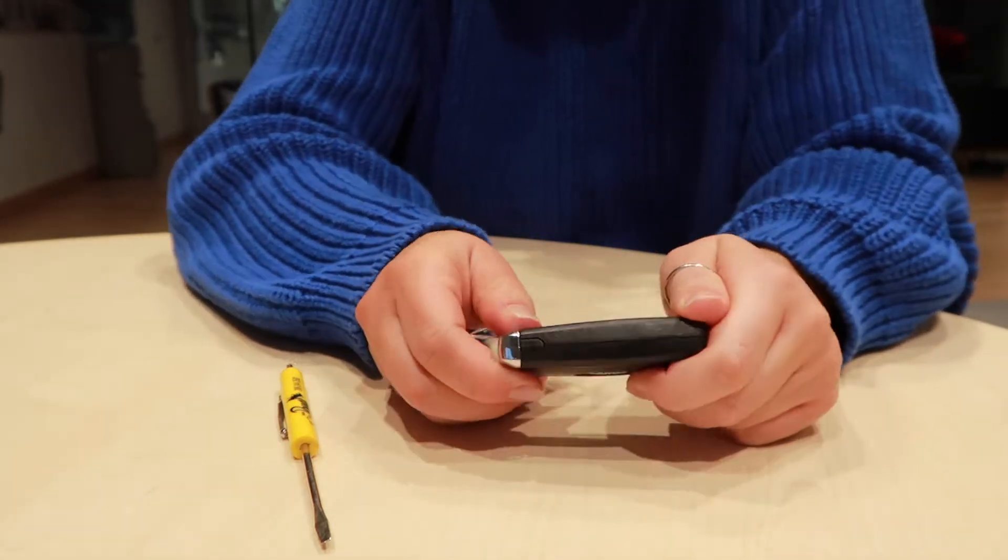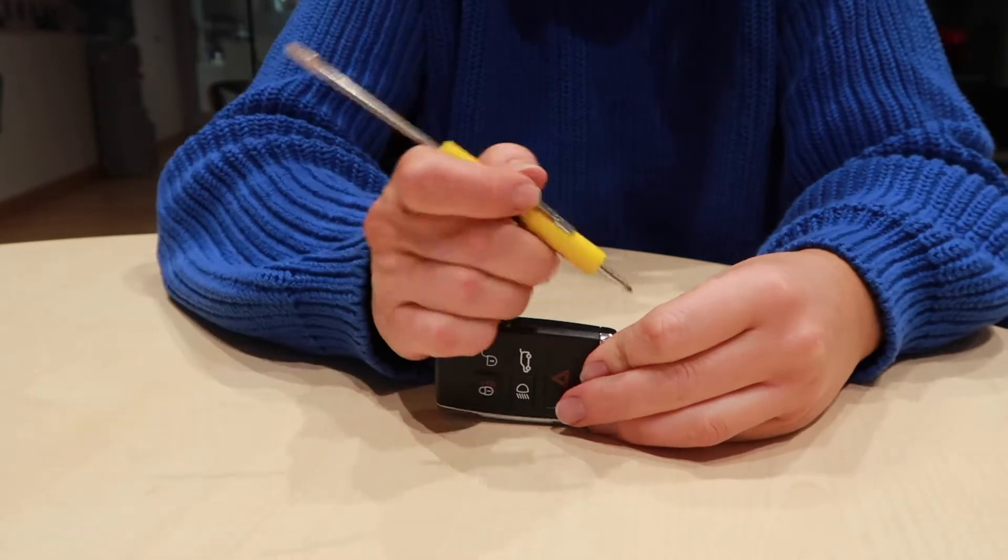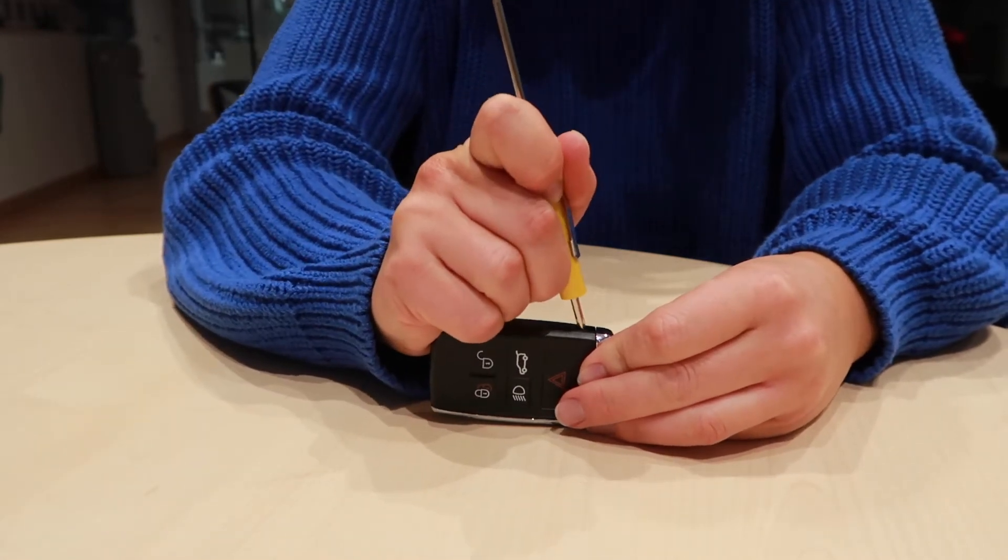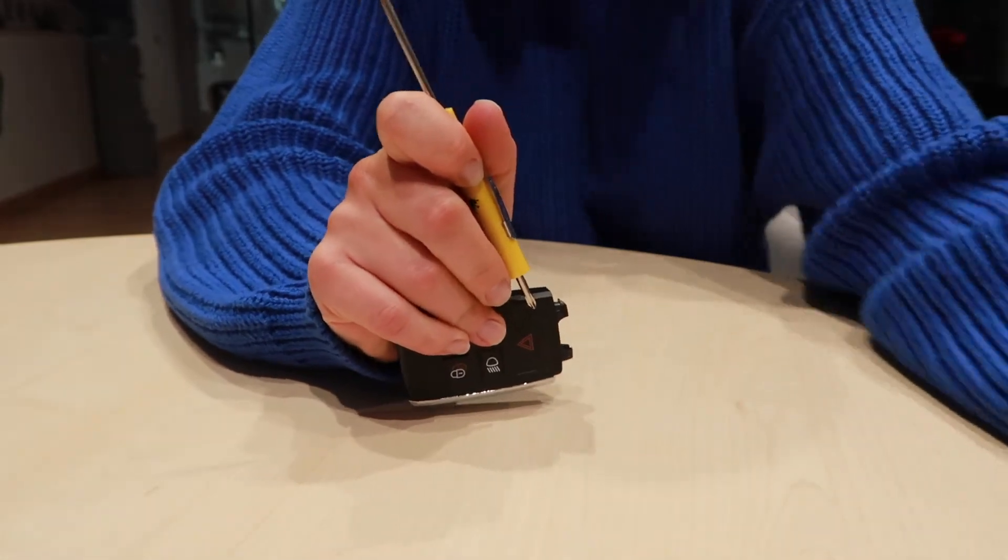You're going to flip it to the side and see a little U button here. Simply take the back end of your flathead screwdriver and press it in pretty far so that the hard key will just pop out. You're going to put that to the side.